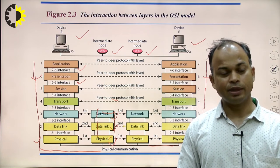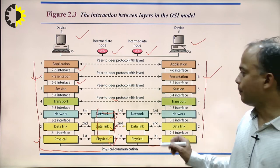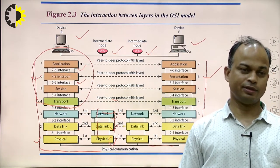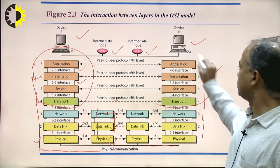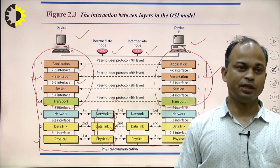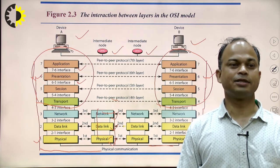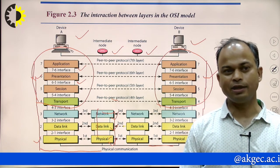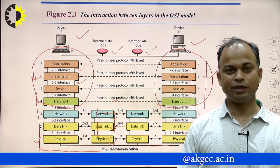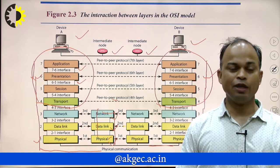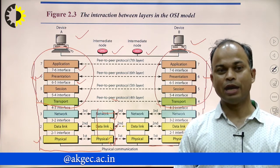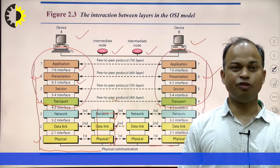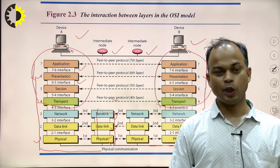If we observe this scenario, the upper four layers — transport layer to application layer — are end-to-end. End-to-end means these layers are applied at the sender side as well as the receiver side, and are not applied at the intermediate nodes. Therefore, upper four layers are end-to-end, and the lower three layers are not end-to-end — the lower three layers are implemented at the intermediate nodes. This is the classification between upper four layers and lower three layers.